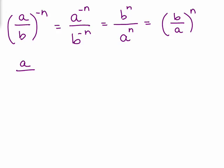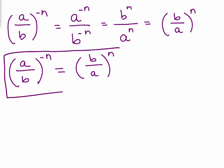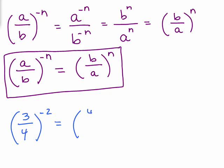So here's another rule you could use: if you have a fraction to a negative number, it's the reciprocal to the positive number. You don't have to memorize that, you would eventually get it by using all the other rules you know. But here's an example, what if I had 3 fourths to the negative 2, it would be a little quicker if I just wrote this as the reciprocal to the positive 2.